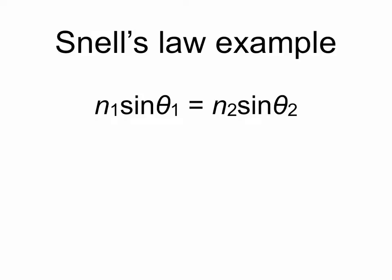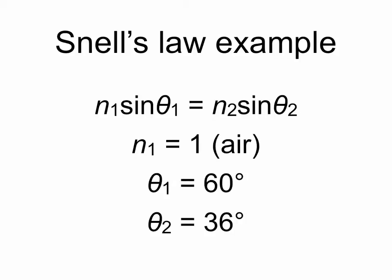So Snell's Law states that n1 sinθ1 equals n2 sinθ2. Well n1 is 1, θ1 we know is 60 degrees, we've measured that, as well as θ2 which is 36 degrees. So we can plug all of these in and the only remaining variable in Snell's Law is n2, the refractive index of the material.